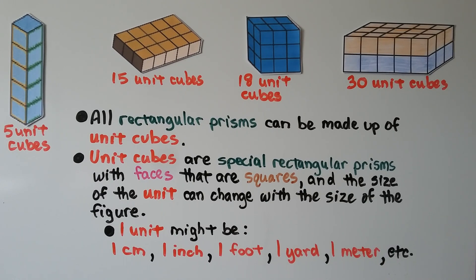All rectangular prisms can be made up of unit cubes. Unit cubes are special rectangular prisms with faces that are squares. The size of the unit can change with the size of the figure — so one unit might be one centimeter, one inch, one foot, one yard, one meter, and so on.